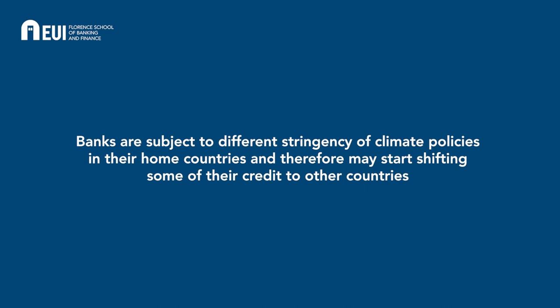The context is that banks are subject to different stringency of climate policy in their home countries and may actually start changing or shifting some of their credit to other countries. One can start identifying this effect with this loan fixed effect. We look over a time span at how the climate policy stringency in the home country of the banks is going to change. There is quite some variation in this climate policy stringency, which one can measure with a variety of measures. In the paper, we use the CCPI and the C3I, which are established climate policy stringency measures. We then look at how the partaking of these banks in loans granted cross-border — in other countries — is going to change as a consequence of the stringency of the climate policy in the home country.